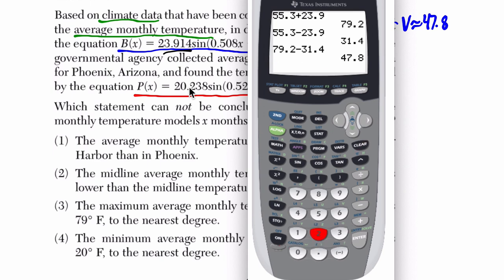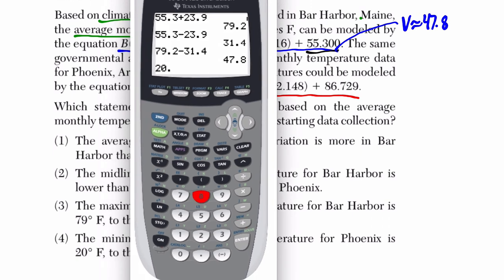That's our high point. And then 86.7 minus 20.2. That's our low point. And then 106.9 minus 66.5.